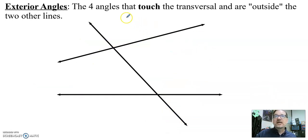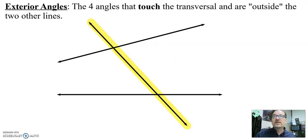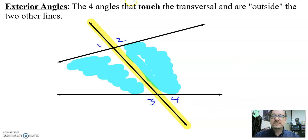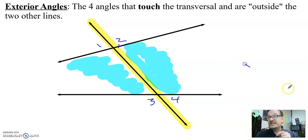We also have exterior angles. Exterior angles are the four angles that touch the transversal and are on the outside. Highlight your transversal, then shade the inside — we shade the inside because the outside is too big. The exterior angles are these four: one, two, three, and four. They are not in the shaded area. They are outside of the shaded area because exterior means outside.